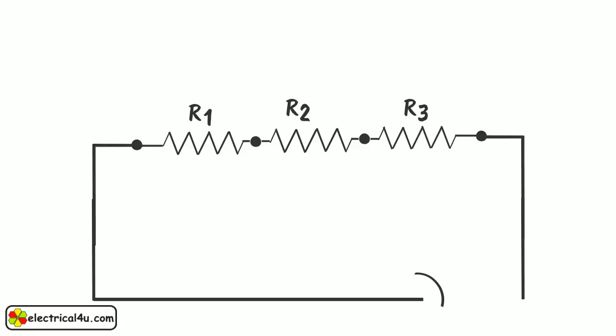Voltage V is connected across the resistors R1, R2, and R3. The current drawn from the battery is I. This current gets only one path through R1, R2, and R3.